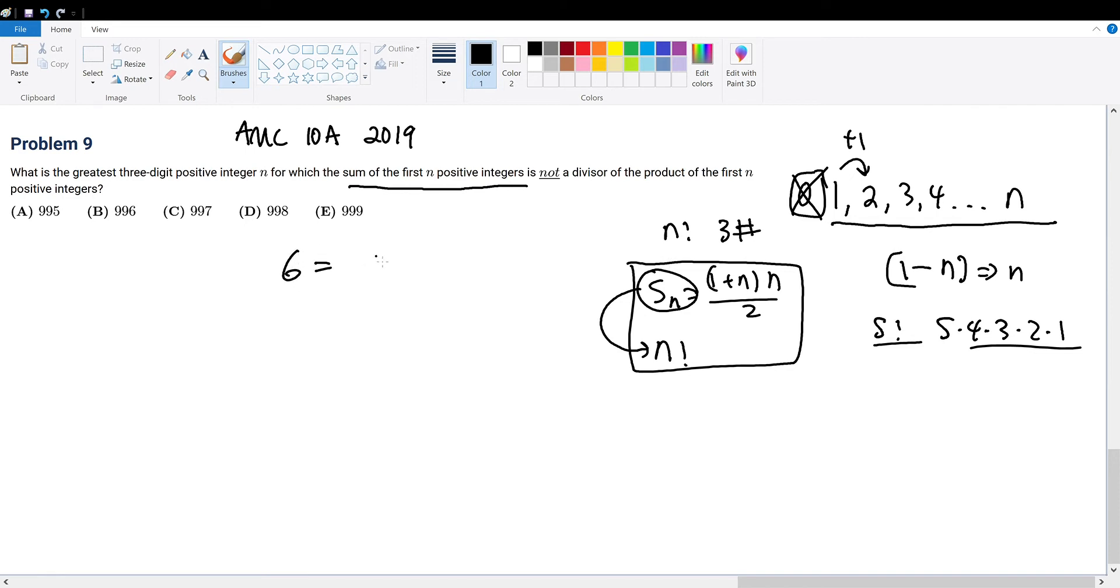For example, we have 6. What can 6 be divided into? 6 can be 2 times 3. So that means 2 can be multiplied with 3 to form 6, meaning 2 and 3 are factors or divisors of 6. Divisor is the same thing as factor. 2 and 3 are divisors of 6 because they can be multiplied by another factor to form such a number.